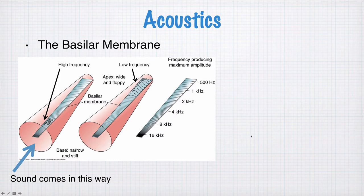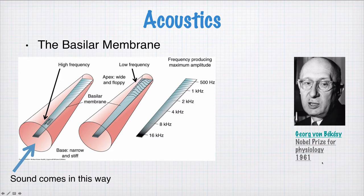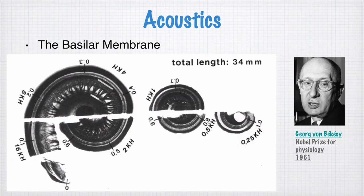The function of the basilar membrane was discovered in the 1950s, and Georg von Békésy won the Nobel Prize for his work in 1961. If you want to see what the real cochlea looks like, it's something like this — a cutaway of a cochlea. The basilar membrane lies along here, and all of these black bits are the nerves connected to the basilar membrane. It's cut into three different pieces here. The total length, if you unrolled all three pieces, is about 34 mm.